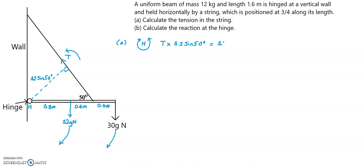So that's going to be 12g times the perpendicular distance that force is from the hinge, which is 0.8 m, plus the weight at the end of the beam, which is 30g, and its distance from the hinge is 1.6 m. So simplifying the right-hand side, that gives 57.6g.